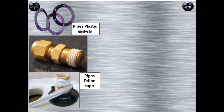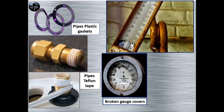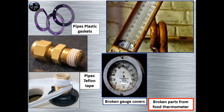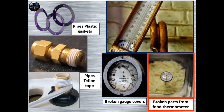Also from broken gauge covers — very critical, because sometimes these covers are made from glass and sometimes from hard plastic. Glass is not allowed in any food industry, so hard plastic is used instead, but it can still be a hazard. Also from broken parts from food thermometers — also very critical, especially in catering.